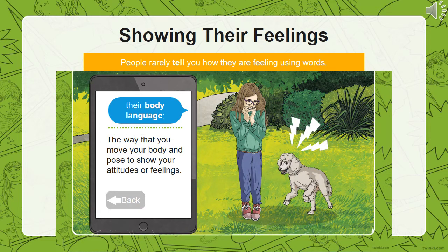People's body language can tell us a lot about how they are feeling. The way that you move your body and pose to show your attitude and feelings can tell us a lot. As you can see here, the young lady's body position and posture shows that she is scared of the dog.